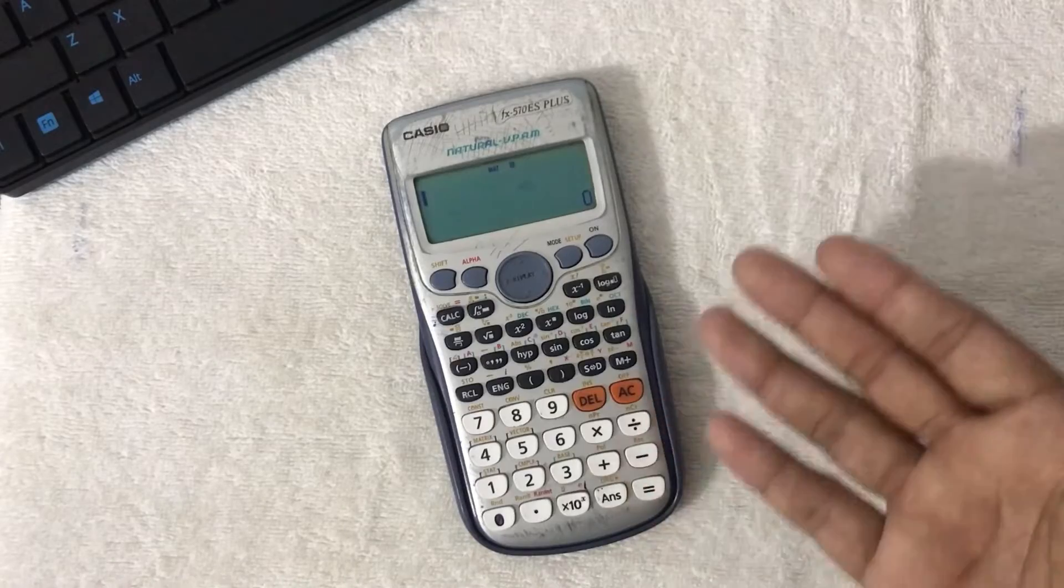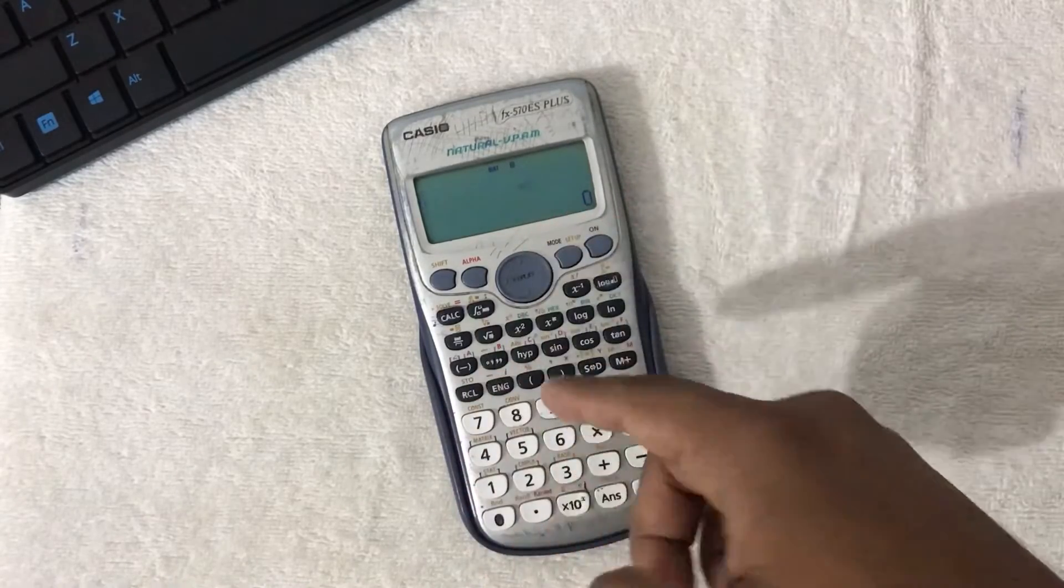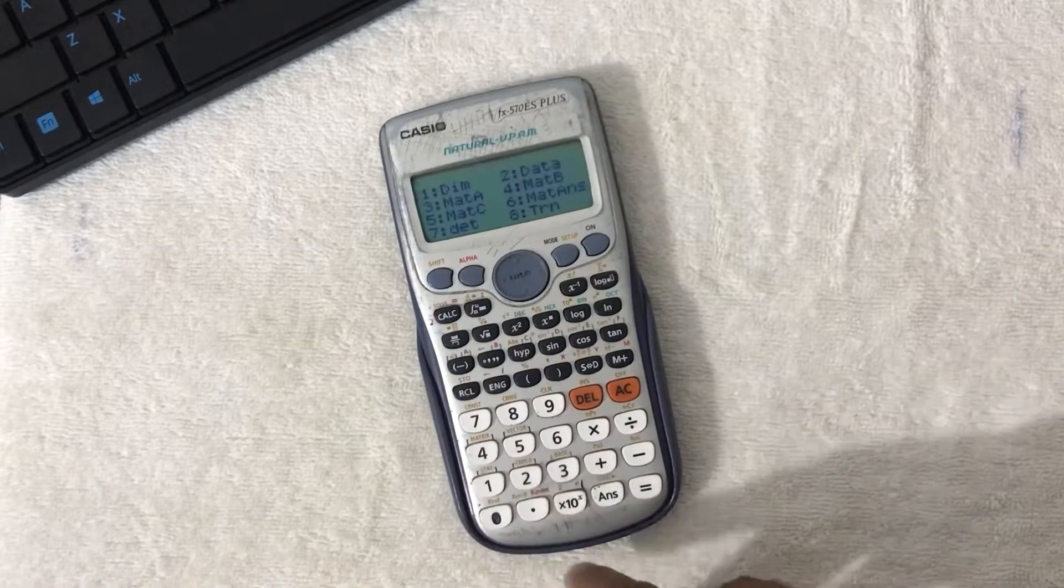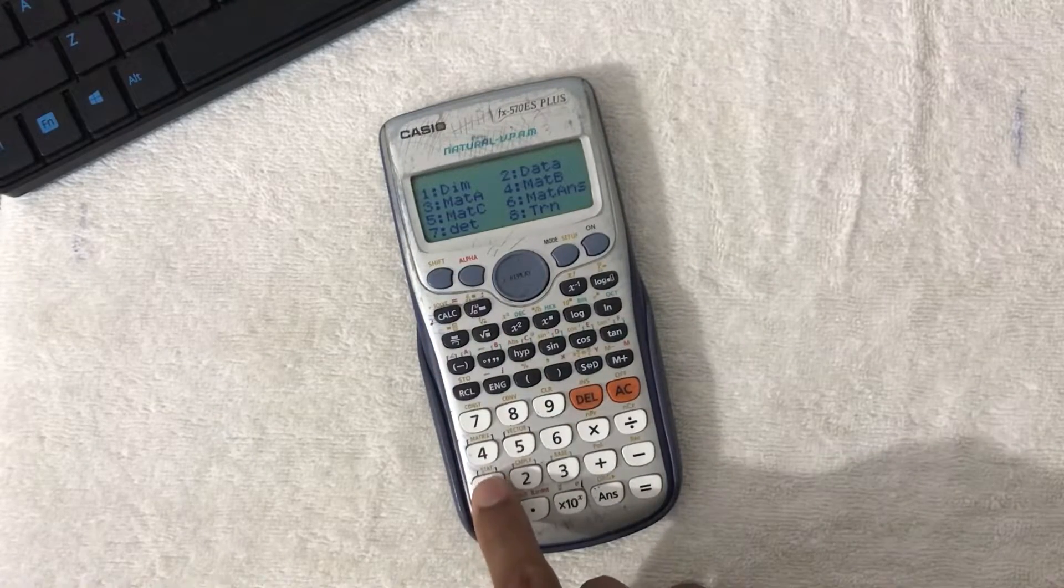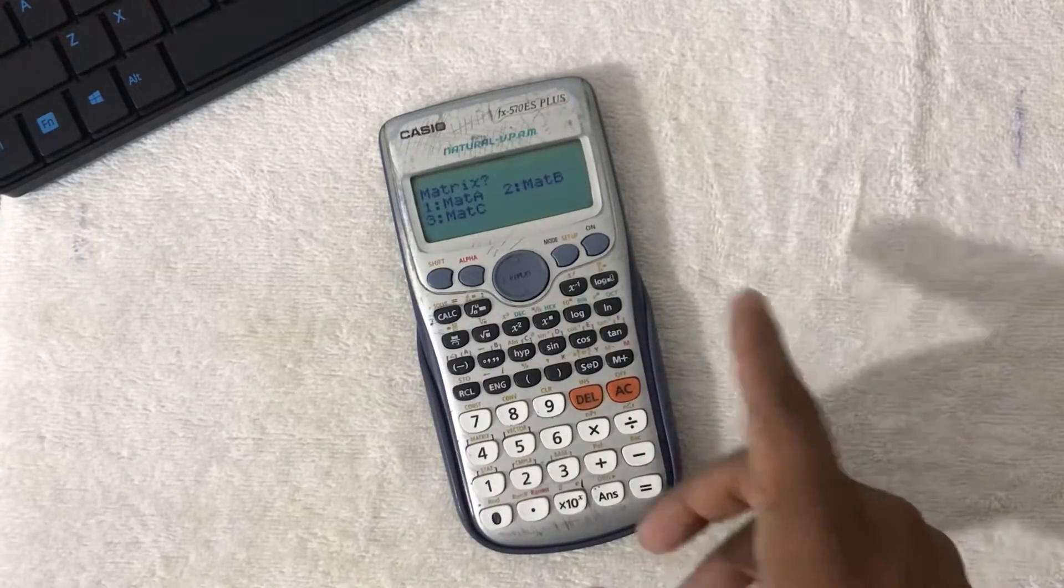The same procedure is for matrix B. Press shift, matrix, then choose dimension. Don't make the mistake - always choose the dimension first. Then I need to choose matrix B, which is the second option.